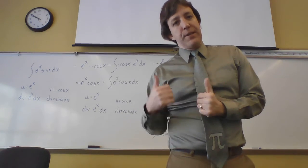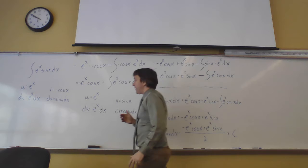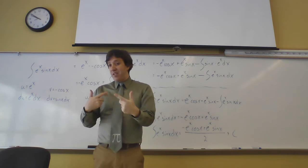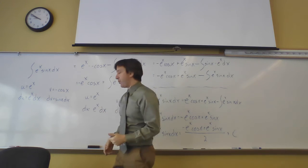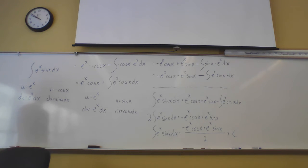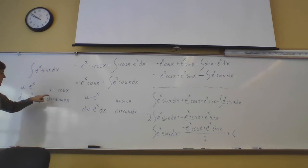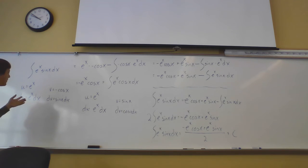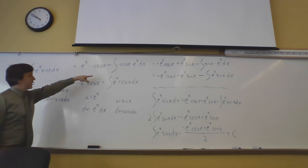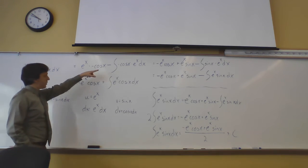One more example and it's a doozy: find the anti-derivative of eˣ·sin(x) dx. The problem is eˣ is its own derivative so it just keeps cycling, and sin(x) just swaps with cosine. I let u = eˣ and dv = sin(x) dx, giving du = eˣ dx and v = −cos(x). Nothing got simpler, and there's no way to make it simpler even swapping the choices, so let's just run with it. Plugging in: u·v = eˣ·(−cos x), minus the integral of (−cos x)·eˣ dx.